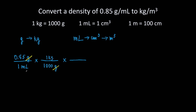Milliliters cancel out. We have milliliters on the bottom, so we will put 1 milliliter on top of the fraction and 1 cubic centimeter on the bottom of the fraction. Milliliters cancel out and we are left with cubic centimeters. But we need to get cubic meters, so now let's use this relationship.